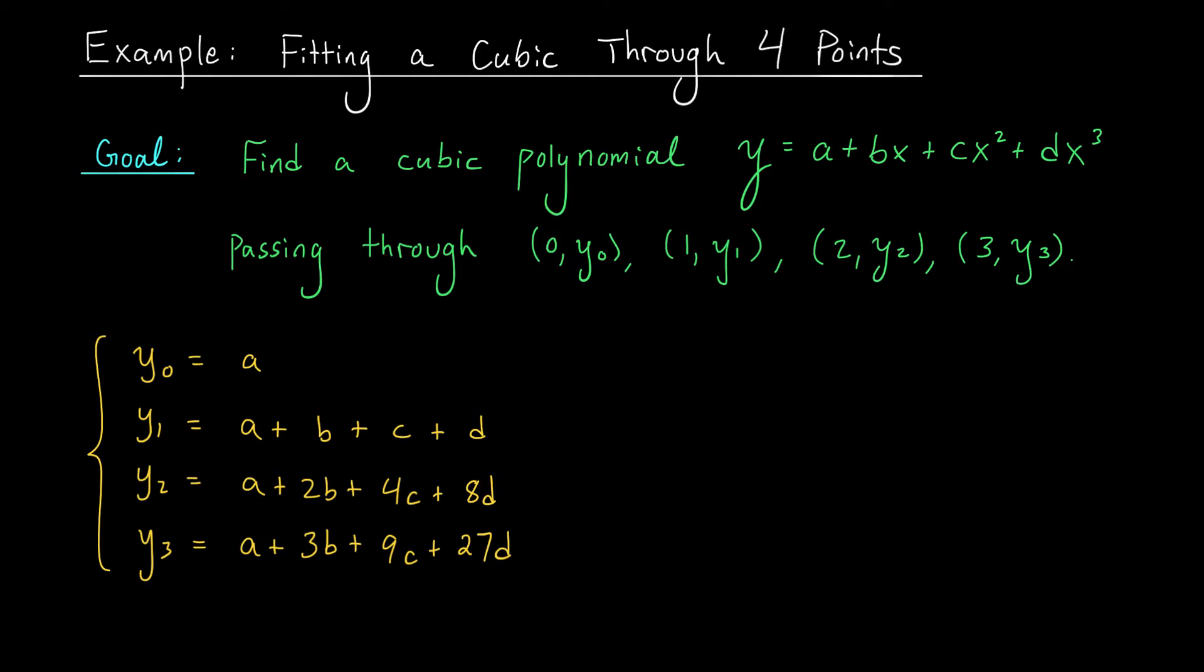Really all we have to work with is that the cubic is to pass through the four points. So if I take any of the four points, let's say the first one, and I plug in 0 for my x then I should get y0 on the left hand side. But if I plug in 0 for x then my last three terms disappear and I just get y0 equals a. I do the exact same thing with the other terms and I end up with a system of four equations with four unknowns.